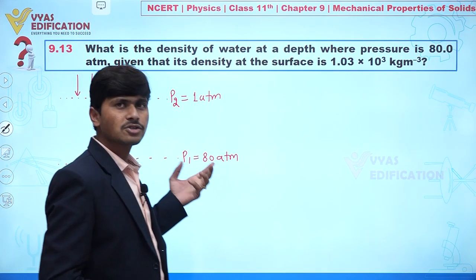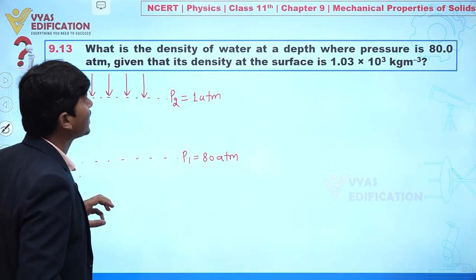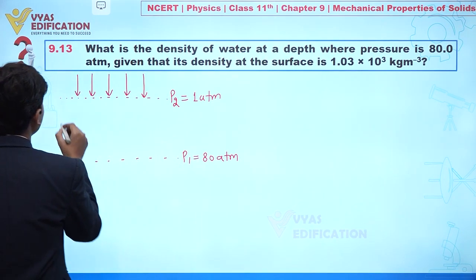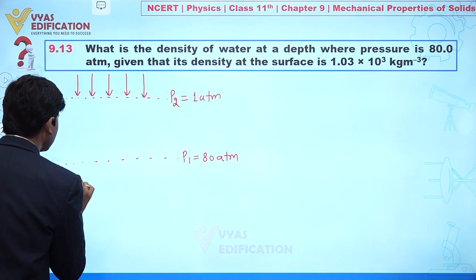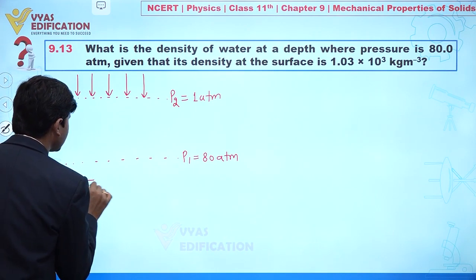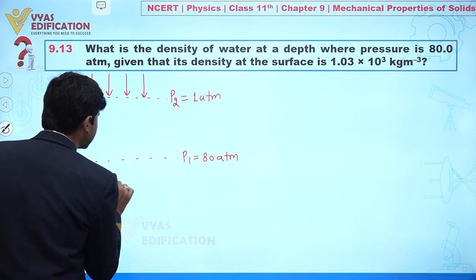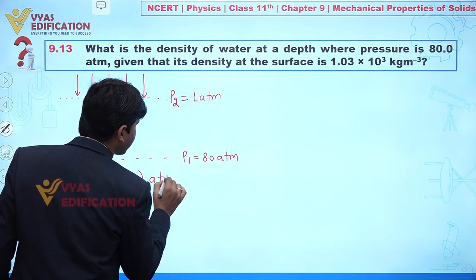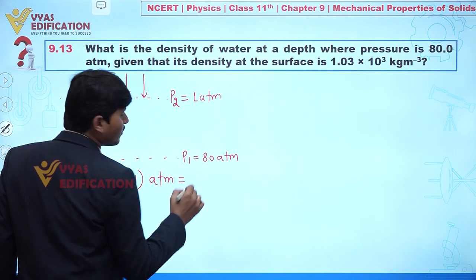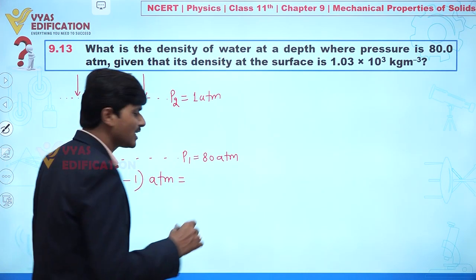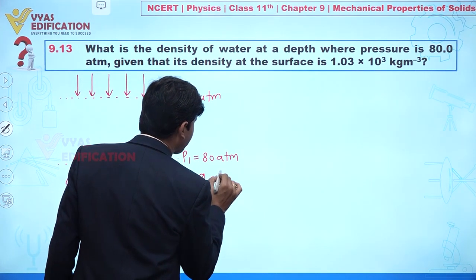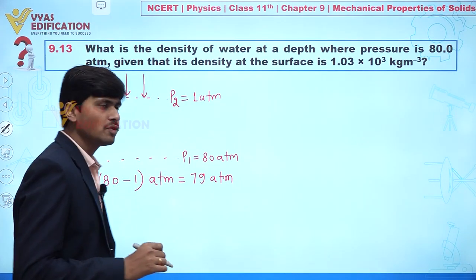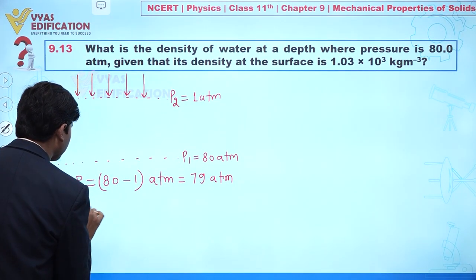We have to find the density at depth. We can first calculate the change in pressure: ΔP = 80 − 1 = 79 atm.